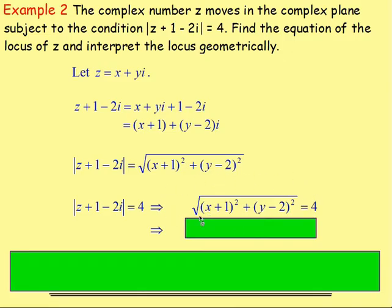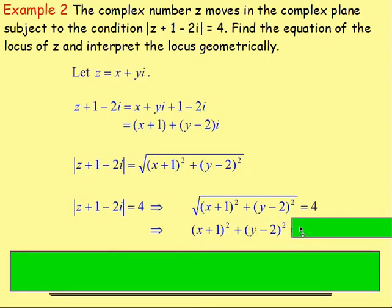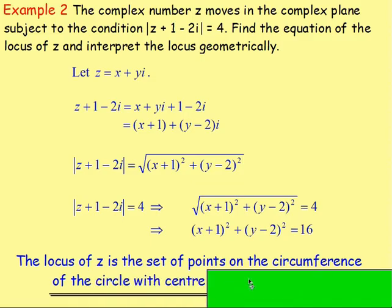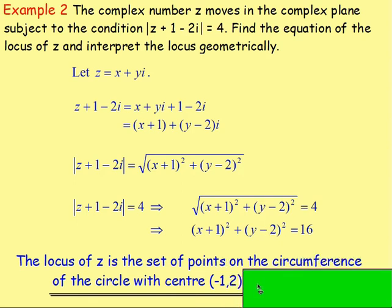That is the equation of a circle. Interpreting geometrically, the points lie on the circumference of a circle. The centre: from the equation (x + 1)² + (y − 2)², you change the signs, giving centre (−1, 2). The radius is 4.